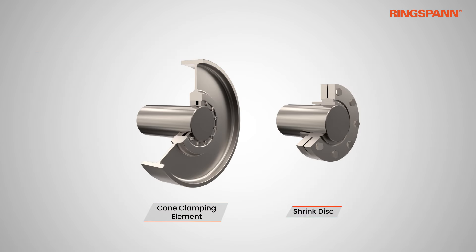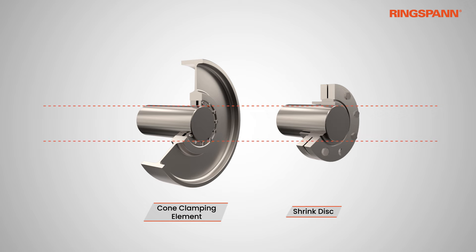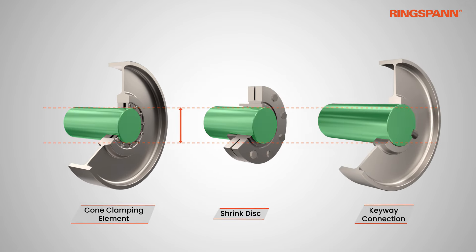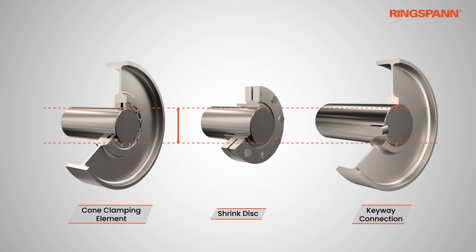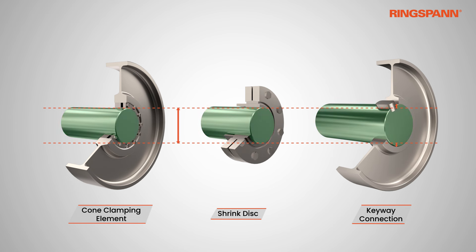This helps designers to select a smaller and more compact shaft. As illustrated in the following animation, you can see that some torque is transmitted via a cone clamping element or shrink disc in a much more compact area as compared to a keyway connection.